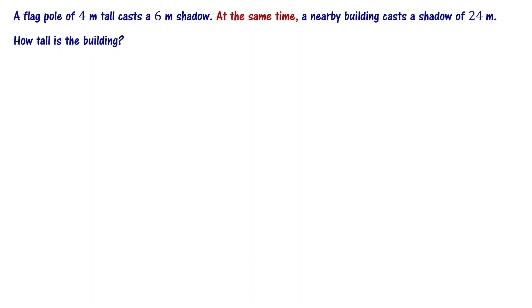A flagpole of 4 meters tall casts a shadow of 6 meters length. At the same time, a nearby building casts a shadow of 24 meters. How tall is the building?